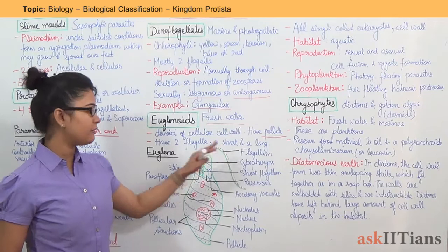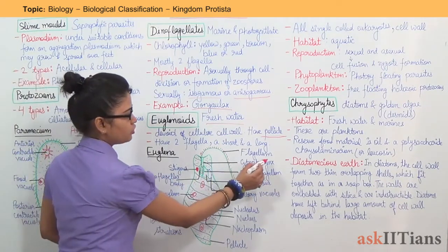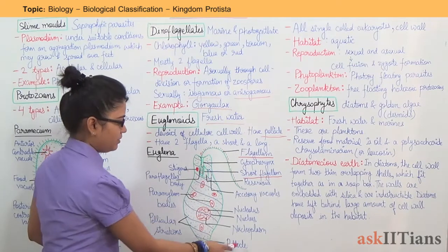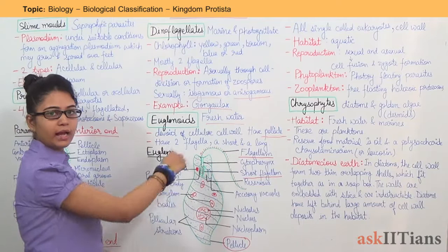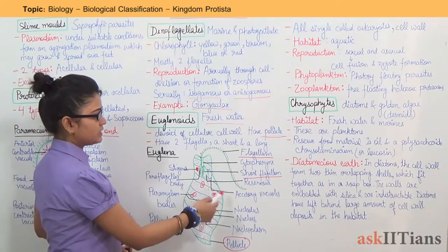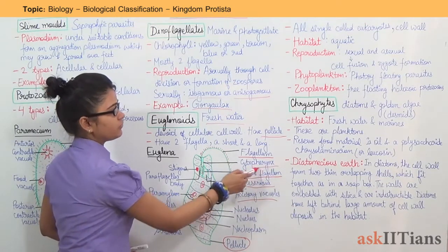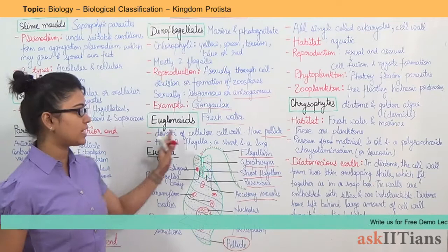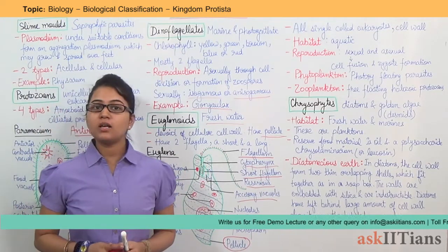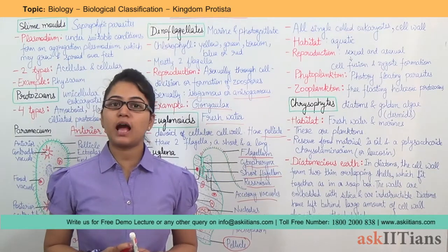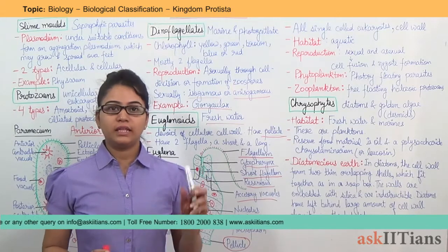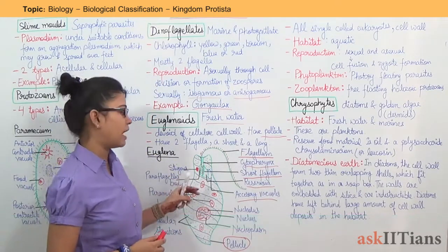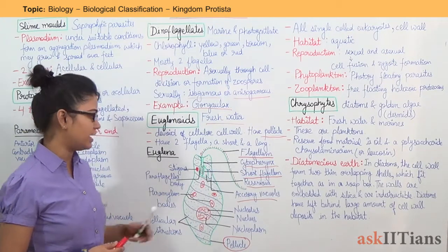Let's look at the diagram of euglenoids. You can see they have two flagella — one is the larger one and one is the short one. The thin outer covering is known as pellicle. Accessory structures are present, and it has a reservoir. Students should know all the features under each diagram, because in pre-medical examinations, many questions are based on diagrams — they will give you a diagram with an arrow and ask you to identify a part of the euglena.